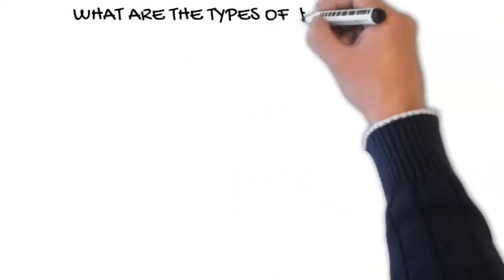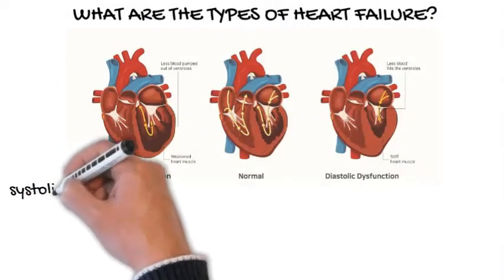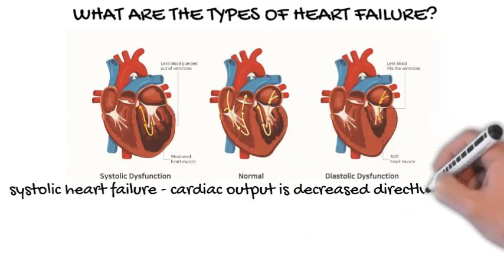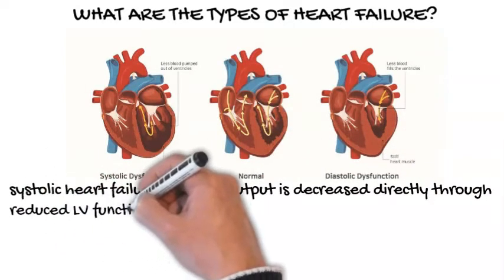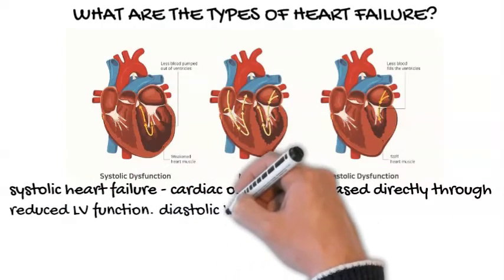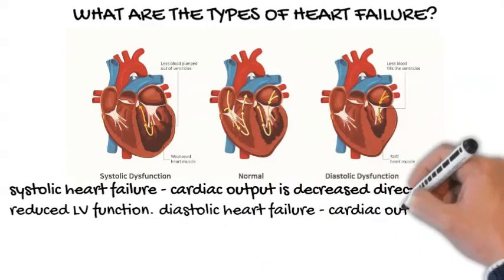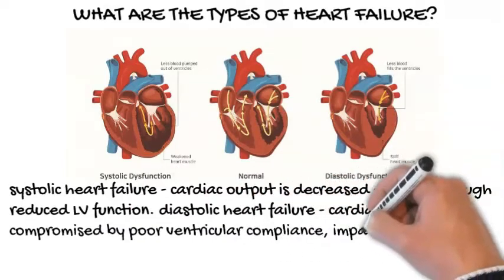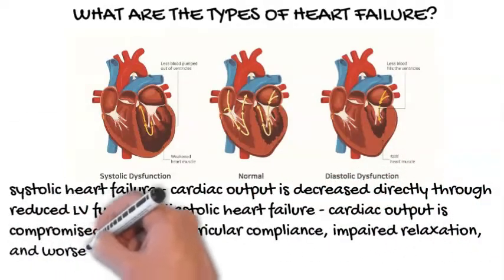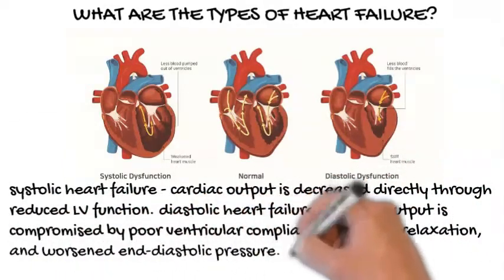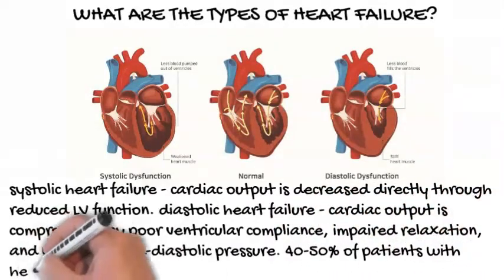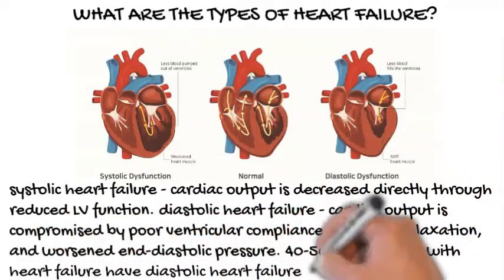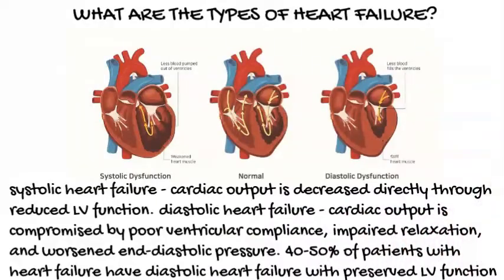What are the types of heart failure? In systolic heart failure, cardiac output is decreased directly through reduced left ventricular function. In diastolic heart failure, cardiac output is compromised by poor ventricular compliance, impaired relaxation, and worsened end diastolic pressure. As many as 40–50% of patients with heart failure have diastolic heart failure with preserved left ventricular function.